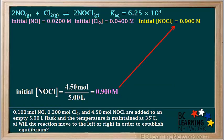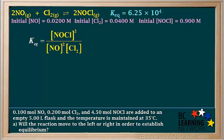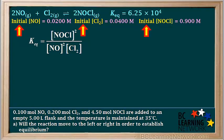The next thing we do is write the Keq expression for this reaction. Notice that all species are gases, so we include them all in the expression. The Keq expression is products over reactants: Keq = [NOCl]² / ([NO]² × [Cl₂]). Now because these are initial concentrations rather than equilibrium concentrations, the ratio we obtain is not called Keq — instead it's called trial Keq. Trial Keq is a measure of the product-to-reactant ratio when we initially add the substances to the flask.